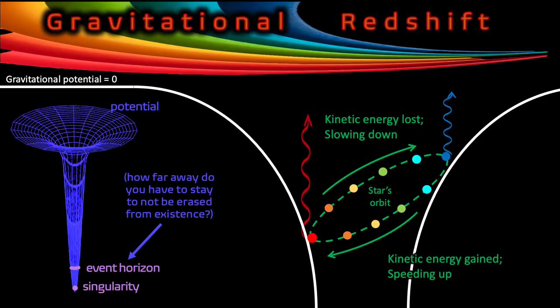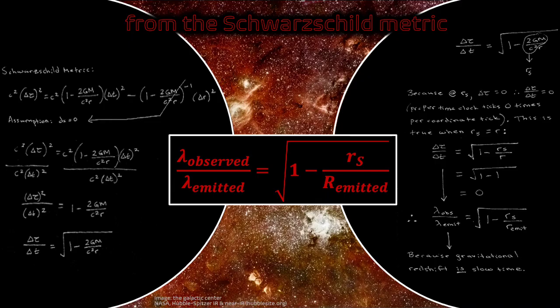Gravitational redshift is the stretching of light's wavelength as it moves from areas of slow time, or deep gravity, to areas of higher potential and less gravity. You might have heard this called curved spacetime. The Schwarzschild metric provides a way to quantify the curvature of space. You guessed it, more calculus.